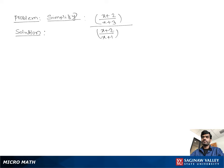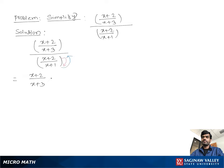Simplify (x+2)/(x+3) divided by (x+2)/(x+1). We keep the numerator fraction as-is, writing x+2 over x+3, then we flip the denominator fraction and multiply, giving us times (x+1)/(x+2).